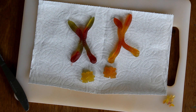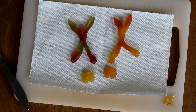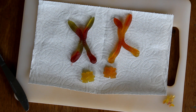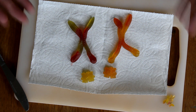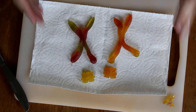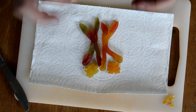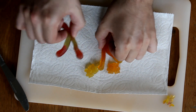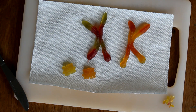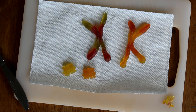During prophase, DNA condenses into chromosomes and the nuclear membrane breaks down. If we were using string instead of gummies, at this point it would have been all stringy bits, and prophase is when it condenses down into what we've made here — the chromosome form. So prophase: DNA condenses into chromosomes and the nuclear envelope breaks apart.